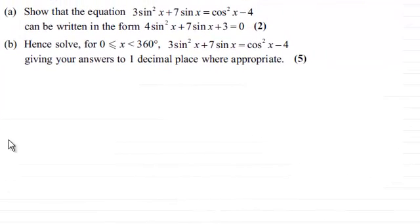Hi there. Now for the first part of this question it says show that the equation 3sin²x + 7sin x = cos²x - 4 can be written in the form 4sin²x + 7sin x + 3 = 0 for two marks. So if you'd like to have a go at this and haven't done so already, I'll just give you a moment to pause the video.